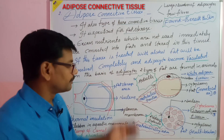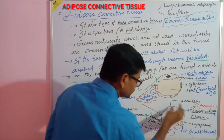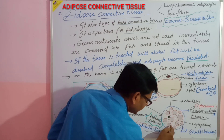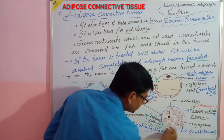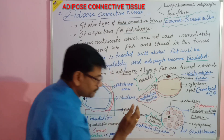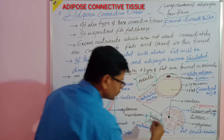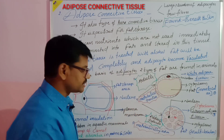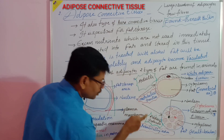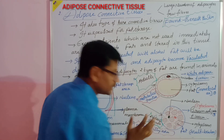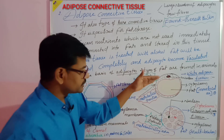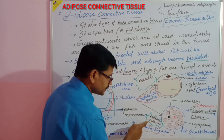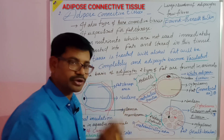In brown adipose tissue, each adipocyte contains many small droplets of fat globules, and more cytoplasm is present. Due to more cytoplasm, more mitochondria are present, allowing them to generate more energy. Brown adipose tissue is more predominant in fetuses and infants. It is metabolically very active. The main difference is that white adipose tissue is predominantly found in adults, while brown adipose tissue is predominant in fetuses and infants.